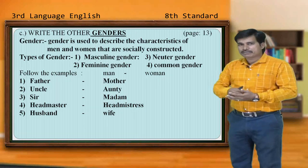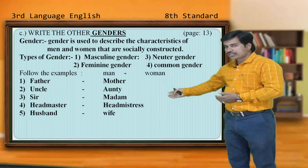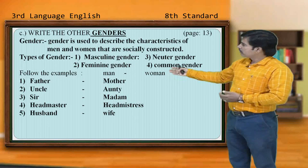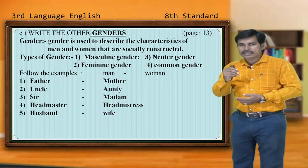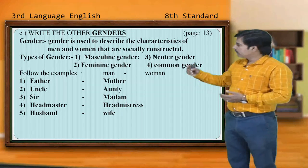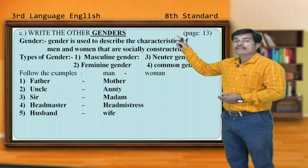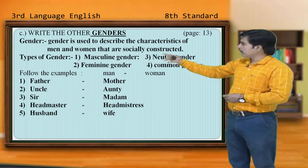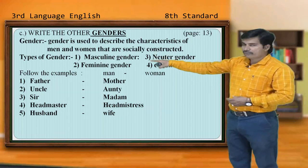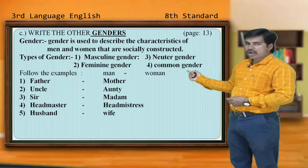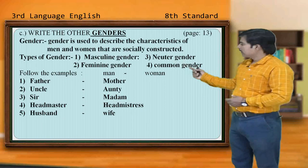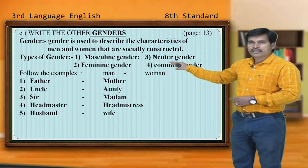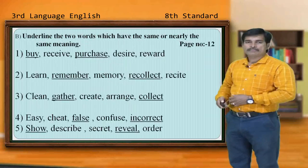Take out your textbook and open page number 13 — there are a number of questions about genders. Take a pencil and write down the answers there. Observe the screen and write the answers. The examples given are: father — mother, uncle — aunt, sir — madam, headmaster — headmistress, husband — wife. Observe your page number 13 in your textbook and fill in the answers.